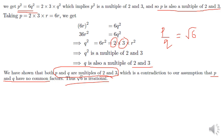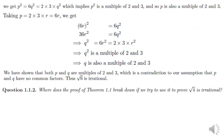We will now move on to the next question: where does the proof of theorem 1.1 — which states there is no rational number whose square is 2 — break down if we try to use it to prove that root 4 is irrational? We know that root 4 is 2, which is rational, not irrational, so the proof must break down somewhere.